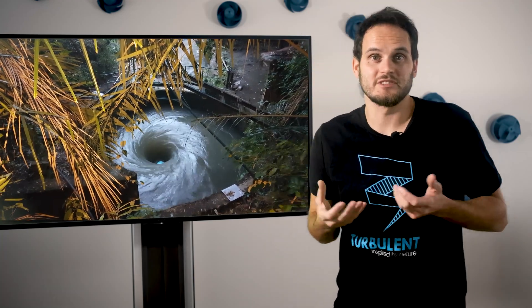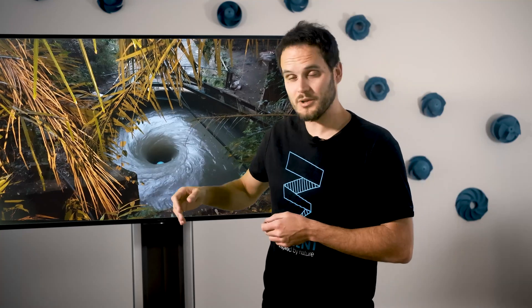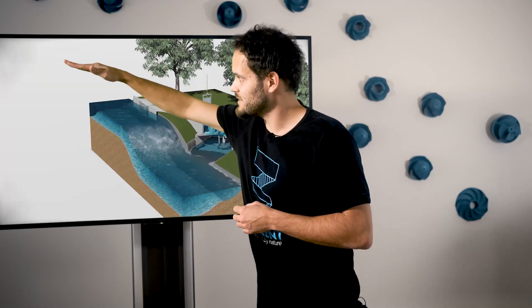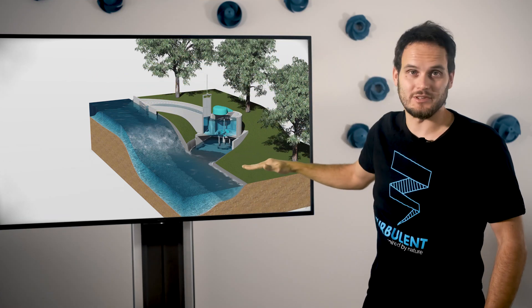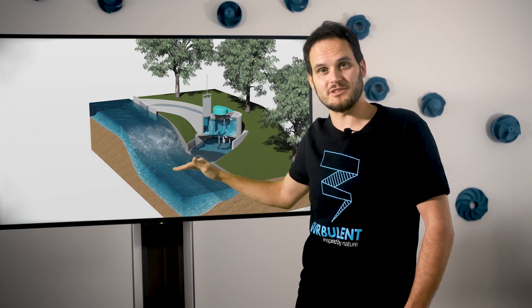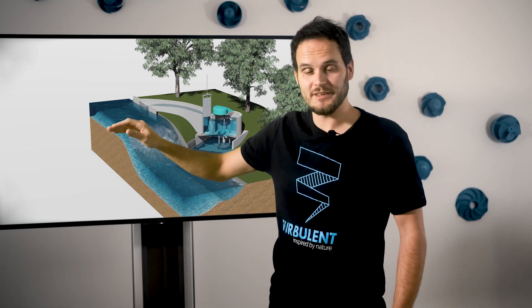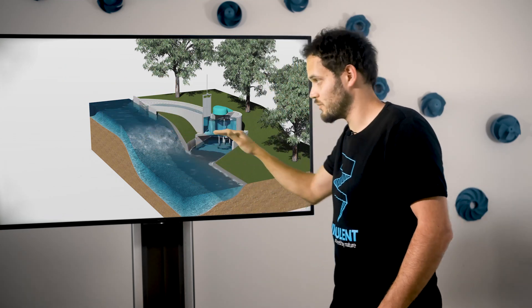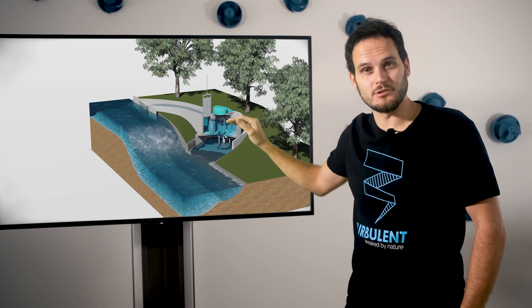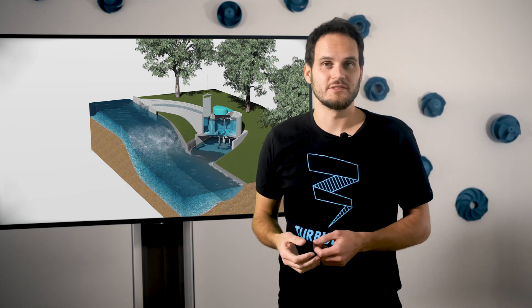You want to develop a vortex turbine. That means you need certain characteristics for your site to actually be able to generate energy. One of the things you'll need is a certain minimum height difference — the difference in height between the upper water level and the lower water level, basically the height that the water is falling down. We also need a certain flow, and that flow should be big enough to actually generate some power.